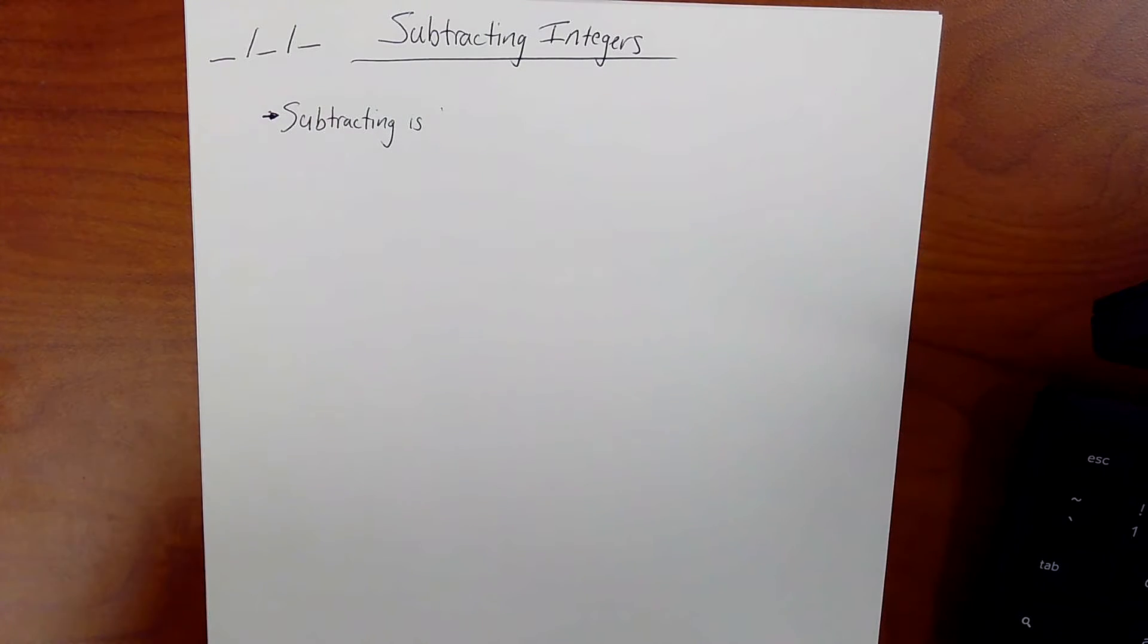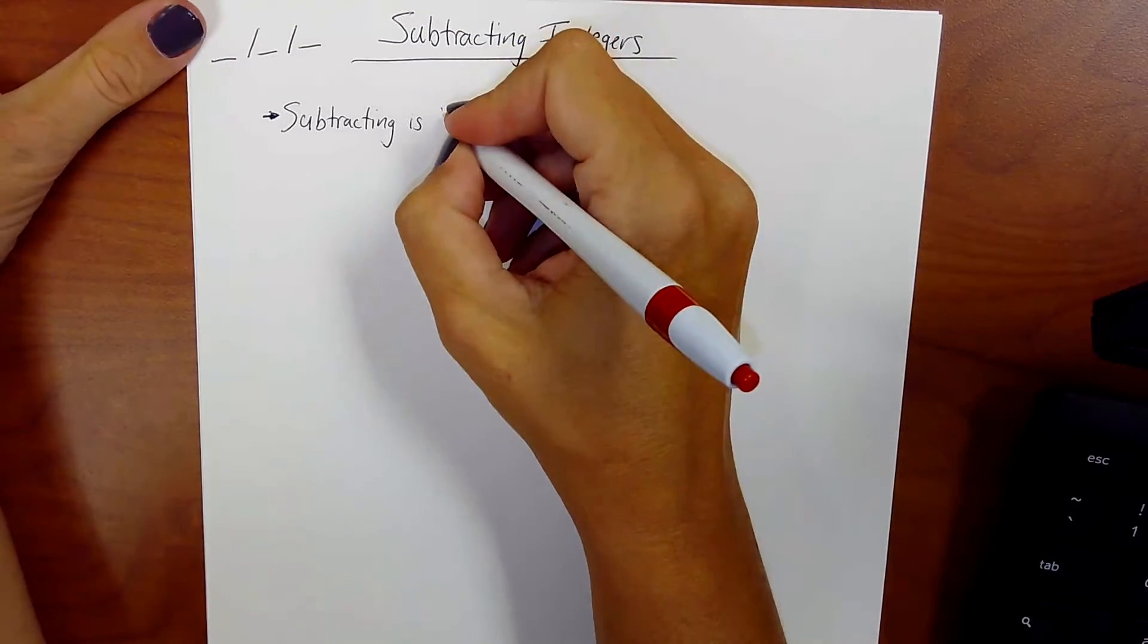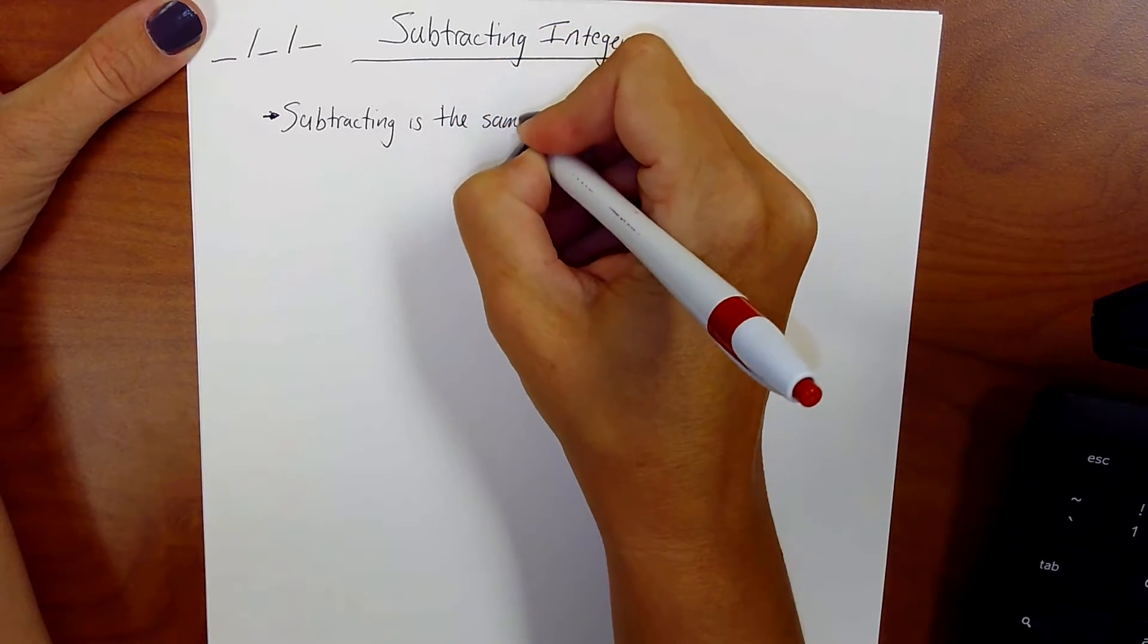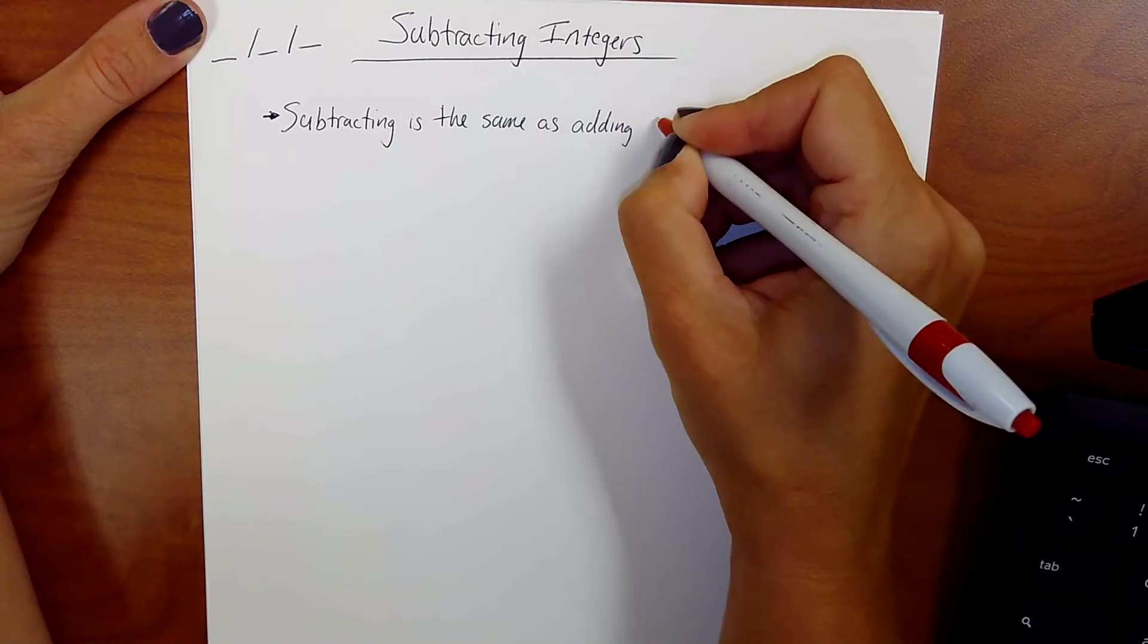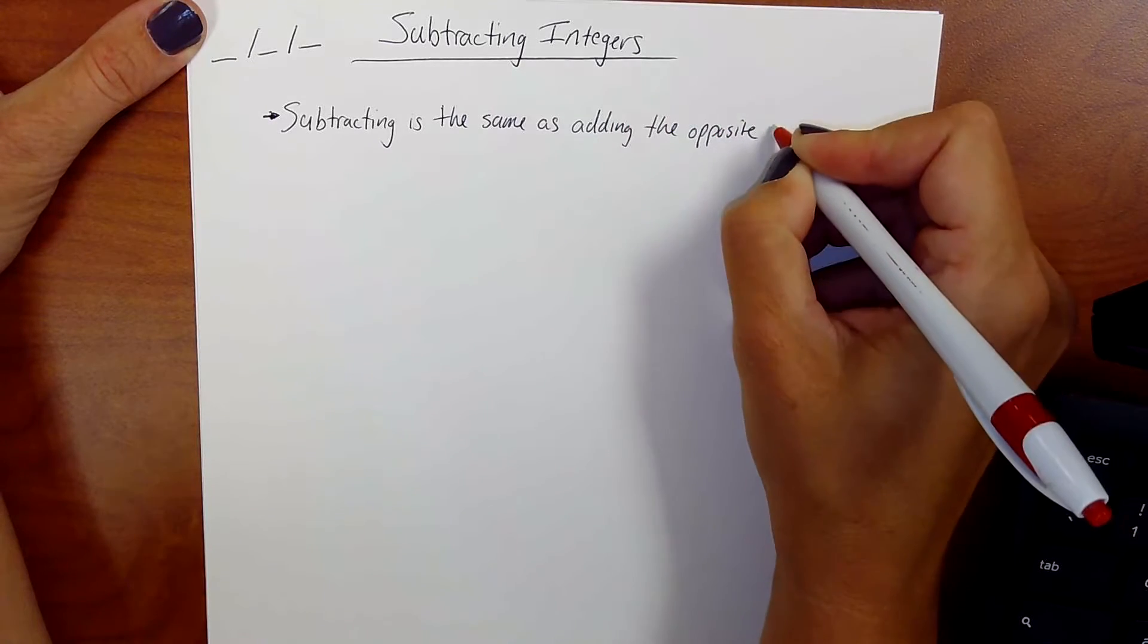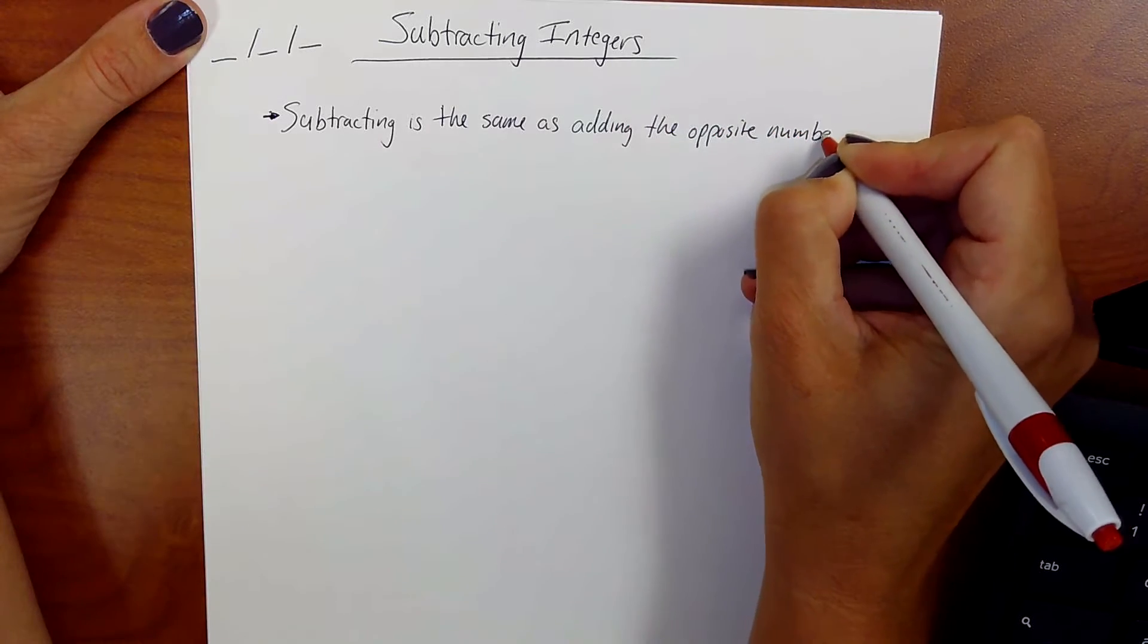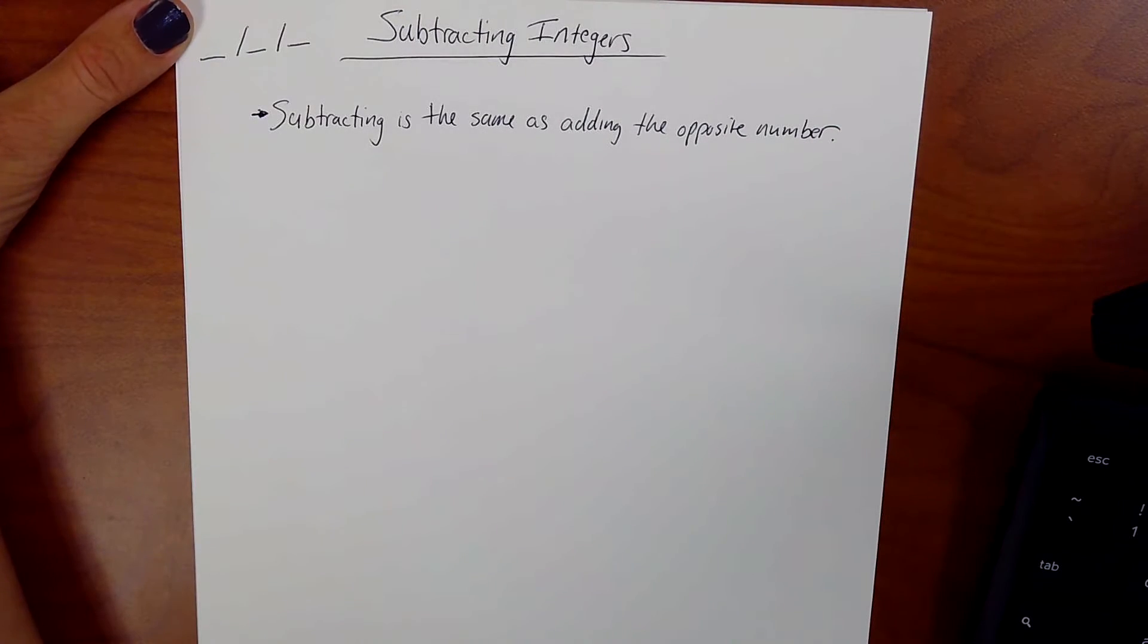I'm going to write one statement that is true and then we're going to go from there. You need to know that subtracting is the same as adding the opposite number. Subtracting is the same as adding the opposite number.